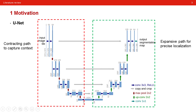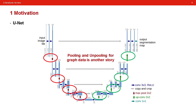This turns out to be a very useful neural network architecture for medical image segmentation. This paper is based on UNet and proposes Graph UNet. The fundamental motivation is that when we want to use pooling and unpooling for graph data, it is a totally different story.